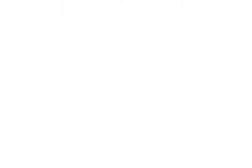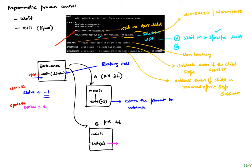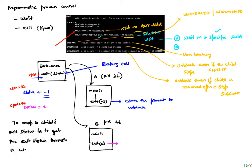All of this has to do with process control. Processes can be sent signals, and the exit status of a process can be reaped. The term 'reap', which is used a lot in the Unix world, means to get the exit status of a child through a wait() or waitpid() call. When I use the word 'reap' from here onwards, that's what I mean.